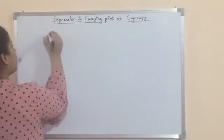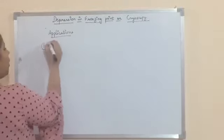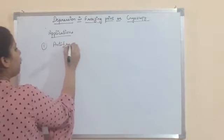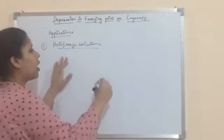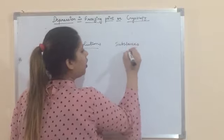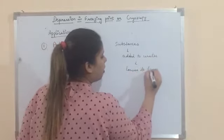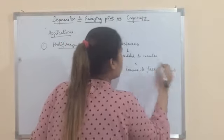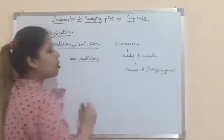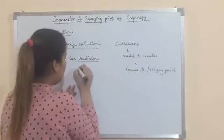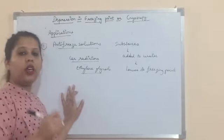The applications of depression in freezing point — where we can use this property: Number one, in forming anti-freeze solutions. Anti-freeze solutions are substances which, when added to water, lower its freezing point. We use this in car radiators in countries where the temperature goes below 0°C, by adding ethylene glycol as an anti-freeze substance into the water in car radiators so that the water does not freeze.